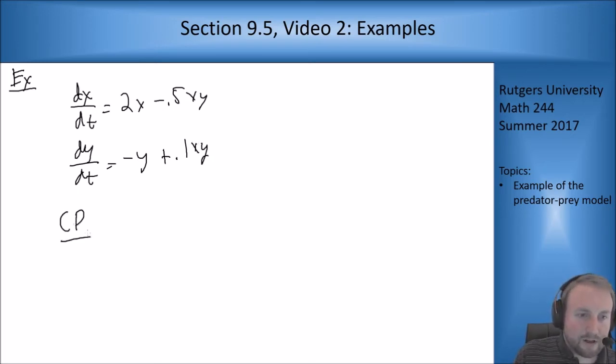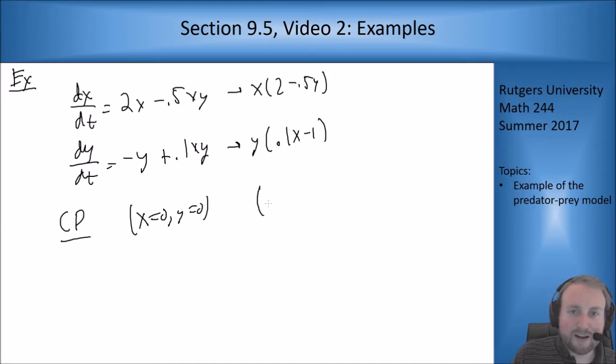The critical points are obviously we have the x equals 0, y equals 0 point, and then if I factor out an x here this is x times (2 minus 0.5y), and this is y times (0.1x minus 1). So the other point we're going to get is x equals 10 and y equals 4.